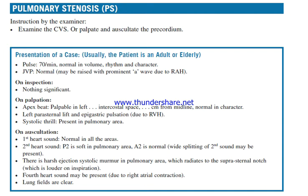Usually the patient is an adult or elderly. Pulse is 70 beats per minute, normal in volume, rhythm and character. JVP is normal.